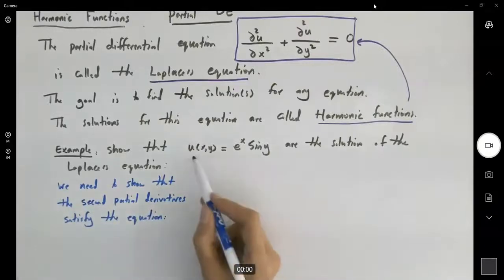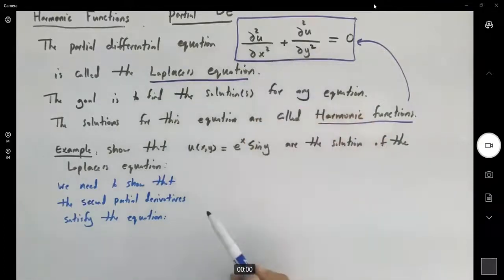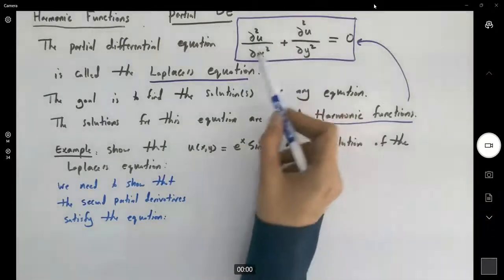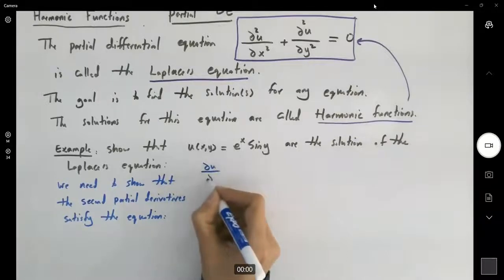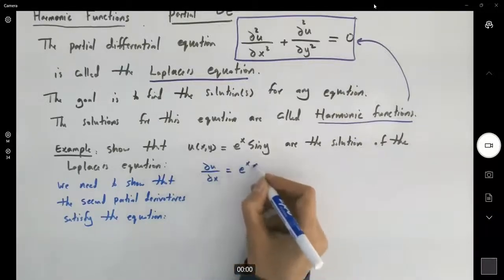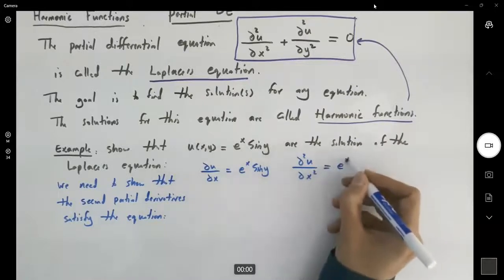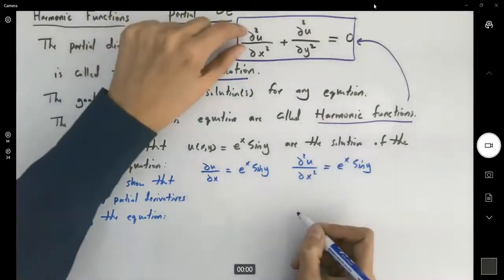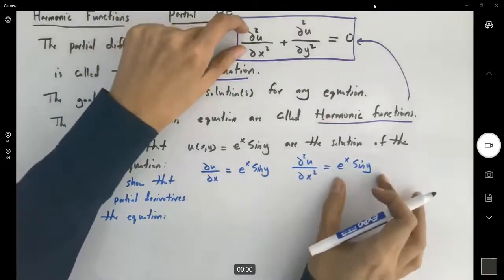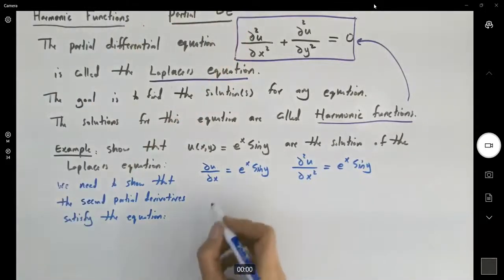We have to find the second partial derivatives. The partial derivative of this function with respect to x is e to the x sine y. The second partial derivative of u with respect to x is again e to the x sine y. So far I found the first portion, which is e to the x sine y.